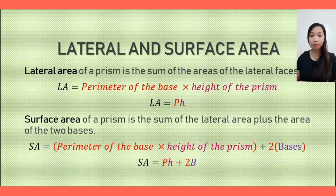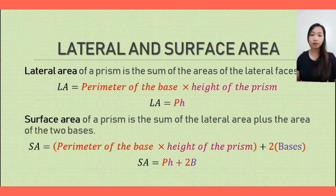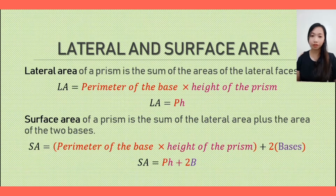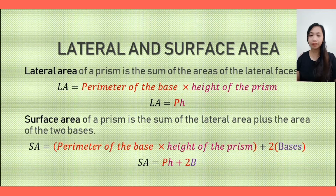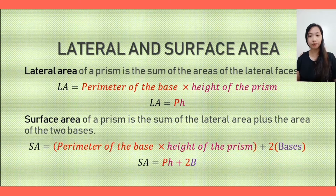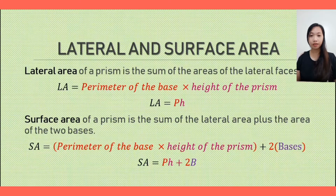Always remember, when computing the area of the base, take note of what kind of polygon the prism possesses. If it is a square, use the area of a square. If it is a rectangle, use the area of a rectangle. It depends on the polygon the prism possesses.